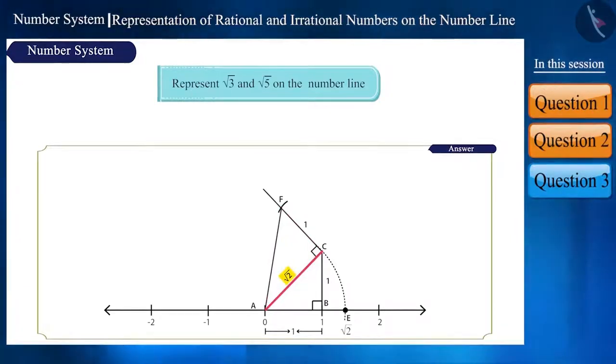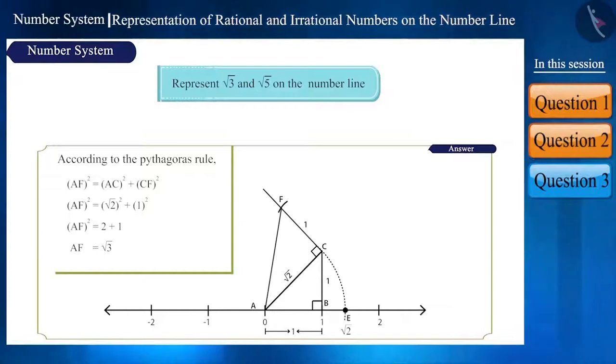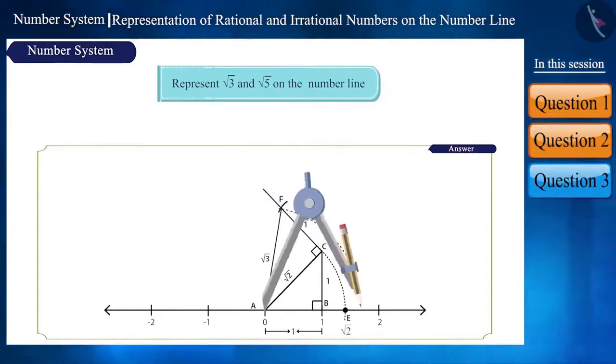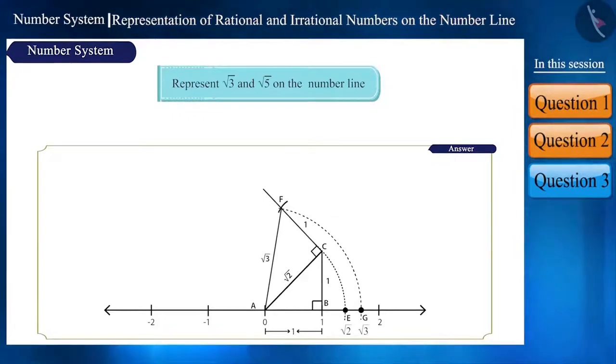Here length of AC is √2 and that of CF is 1. Using Pythagoras theorem, we can find the length of AF which will be √3. Now measure the length of AF using a compass and taking center as point A. Draw an arc on the number line which cuts it at point G and this point G represents √3.